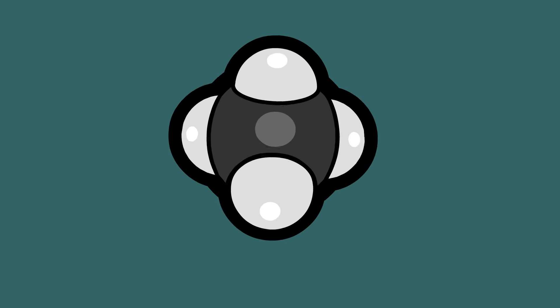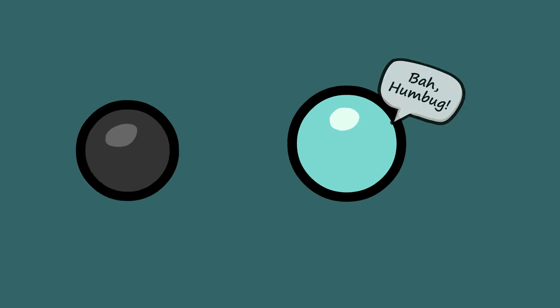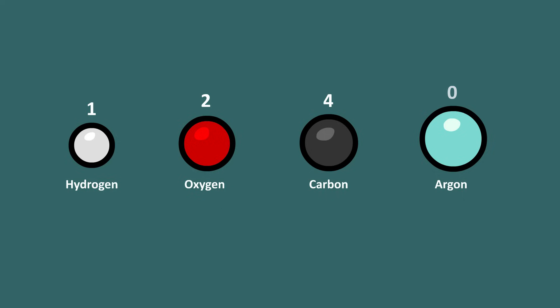An oxygen atom can typically form two bonds. A carbon atom can make four. An argon atom won't usually bond with anything. Even though possible bond numbers per atom are pretty small, huge molecules can form if bonds happen to be properly arranged.